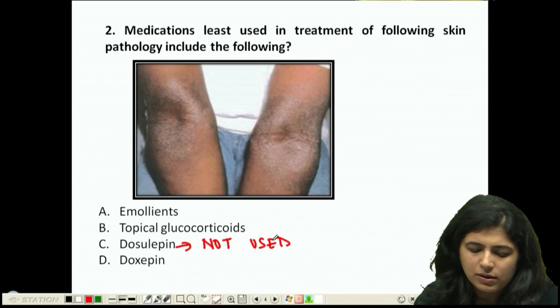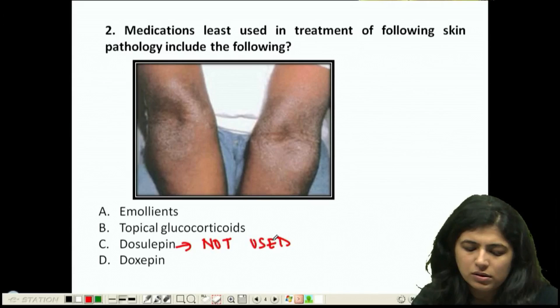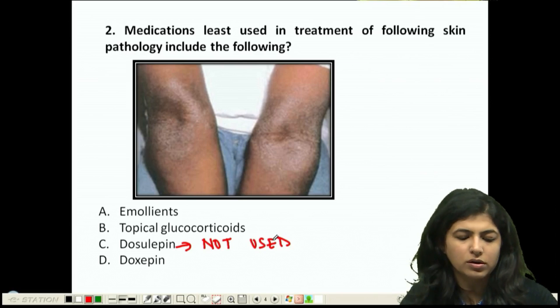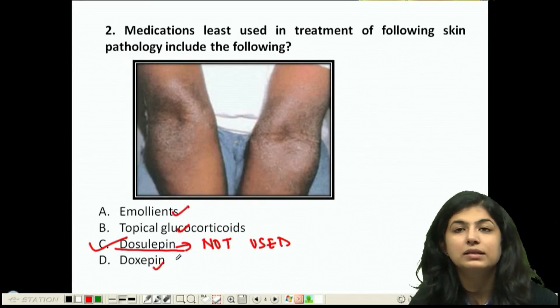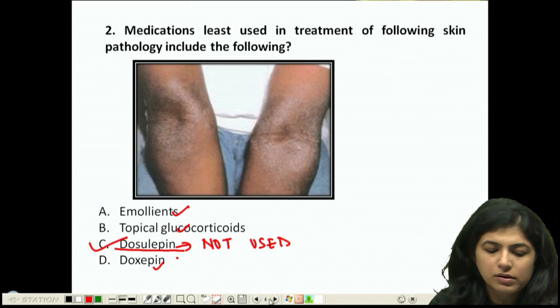So you use the rest of the things but you don't use dosulepin. Clear? Good, so dosulepin is not used - you use emollients, topical glucocorticoids, and doxepin.